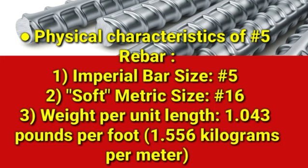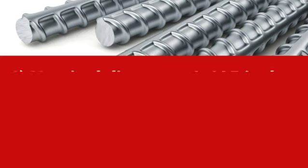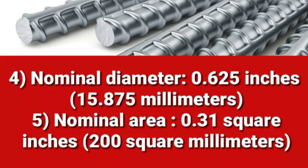The weight per unit length is 1.043 pounds per foot, or 1.556 kilograms per meter. The nominal diameter of number five rebar is 0.625 inch or 15.875 millimeters. The nominal area is 0.31 square inches or 200 square millimeters.